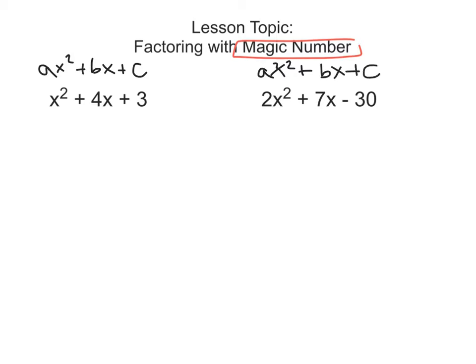They're both in that form, but the key difference for the way we do these two factoring problems is that in this case our a value is 1, which we've already learned how to factor, and in this case over here our a value is 2. So there is a difference in the way we're going to factor these.